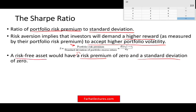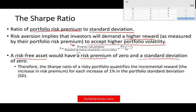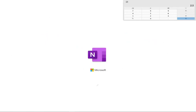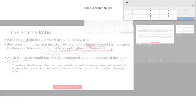Therefore, the Sharpe ratio of a risky portfolio quantifies the incremental reward — the additional reward — for each increase of 1% of the standard portfolio deviation. In other words, as we increase the standard deviation, how much reward are we getting? Let me show you with certain graphs to ask you a few questions so the Sharpe ratio will make more sense.